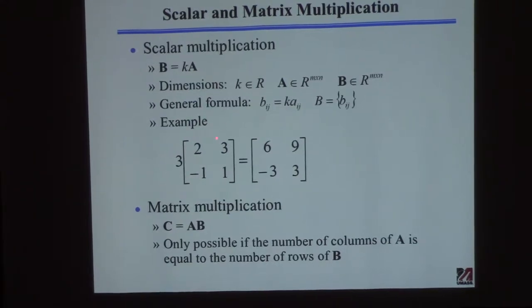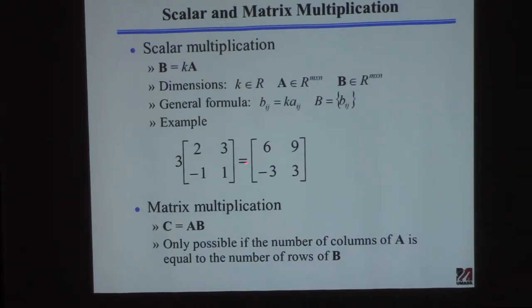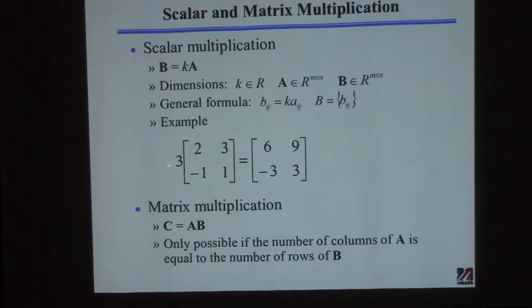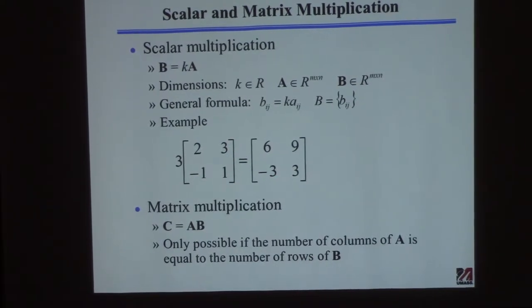If you have this, you just multiply every element of the matrix by the scalar K to get the answer. So I get: 3 times 2 is 6, 3 times 3 is 9, 3 times minus 1 is minus 3, and so on. That's easy enough.